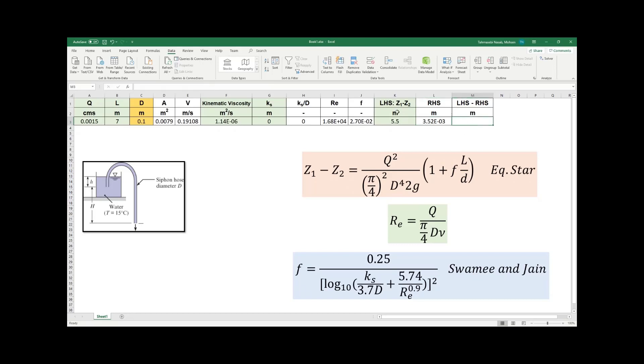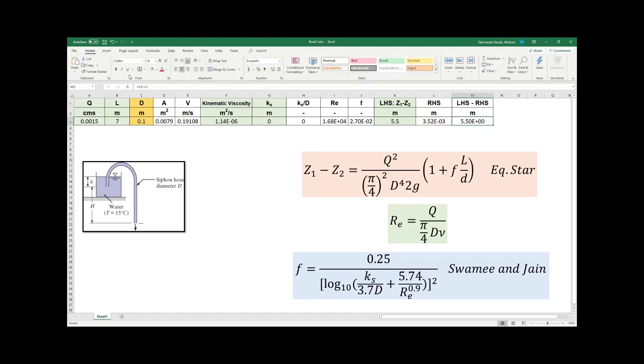As you can see, left-hand side and right-hand side are not equal. It means that my guess for D was incorrect. If I calculate left-hand side minus right-hand side, I can calculate the difference. I want this difference to be 0. I'm going to highlight it here - I want this value to be 0.